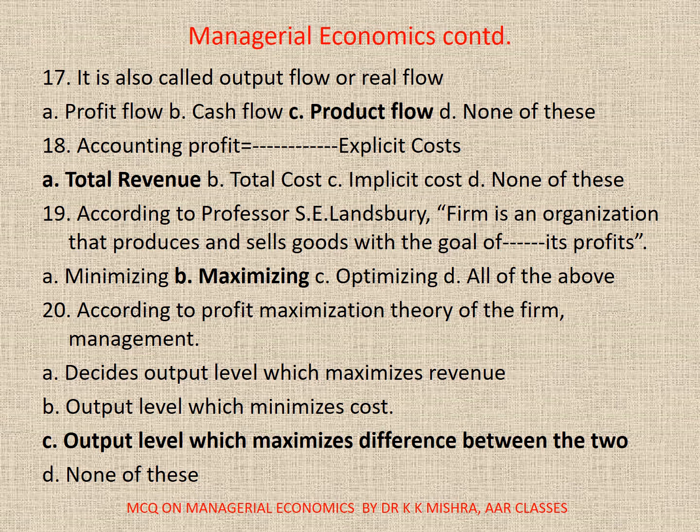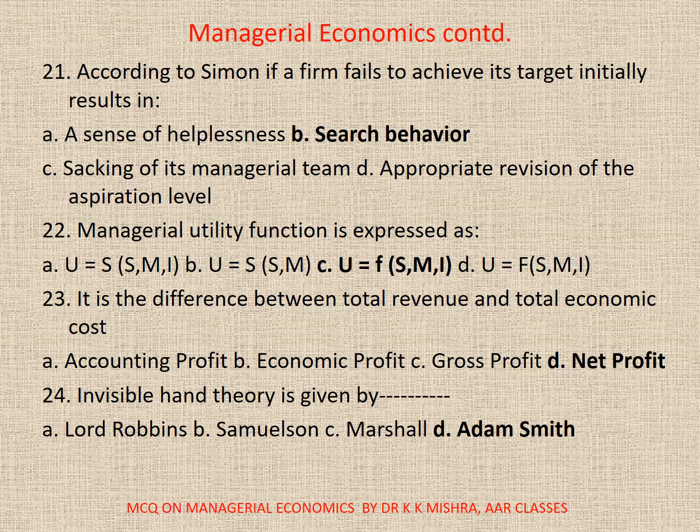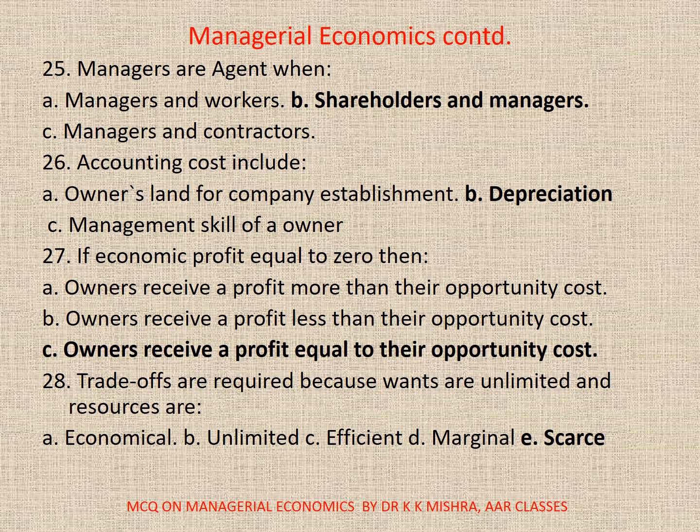Question 20: According to profit maximization theory, the firm management — correct option is C: the output level which maximizes the difference. Question 21: According to Simon, if a firm fails to achieve its target it initially results in A. a sense of helplessness, B. search behavior, C. shaking of its managerial team, or D. appropriate revision of the aspiration level. Correct option is B: search behavior. Question 22: Marginal utility function is expressed as — correct option is C: U is equal to f(S, M, I). Question 23: It is the difference between total revenue and total economic cost. A. accounting profit, B. economic profit, C. gross, or D. net. Correct option is C: net profit. Question 24: Invisible hand theory is given by — correct option is D: Adam Smith. Question 25: Managers are agents when — correct option is B: shareholders and managers.